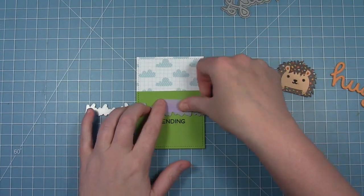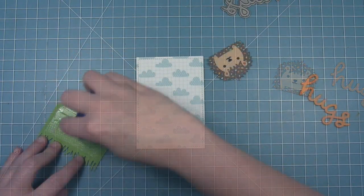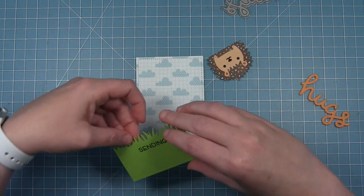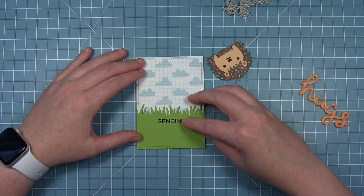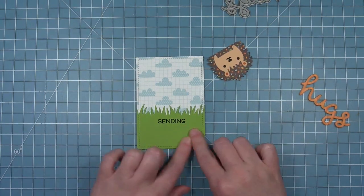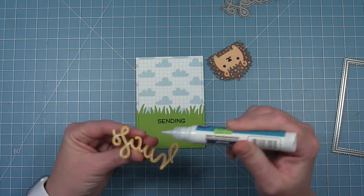I put the hugs there to figure out where that stamp needed to be. I went ahead and stamped it down and then I can cut that grassy border across the top. Then I'm going to layer it onto that stitched rectangle that's cut from that cloud pattern paper.